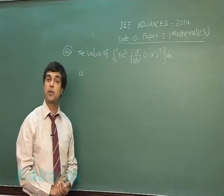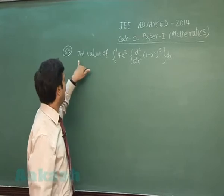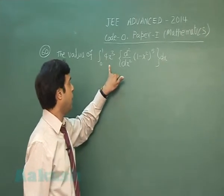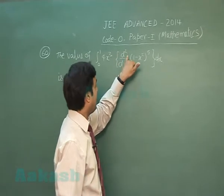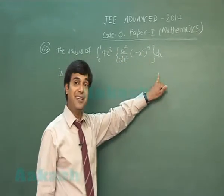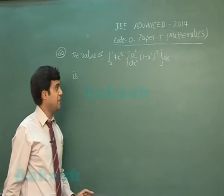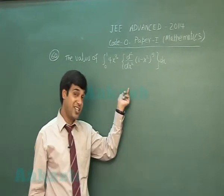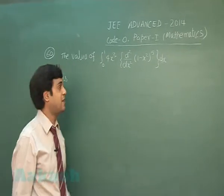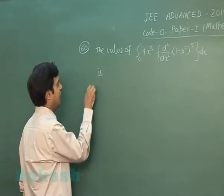Question 60, the last question of Paper 1: find the value of the integral from 0 to 1 of 4x³ multiplied with the second derivative of (1 - x²)⁵ dx. This can be simplified by differentiating twice or by directly applying integration by parts.